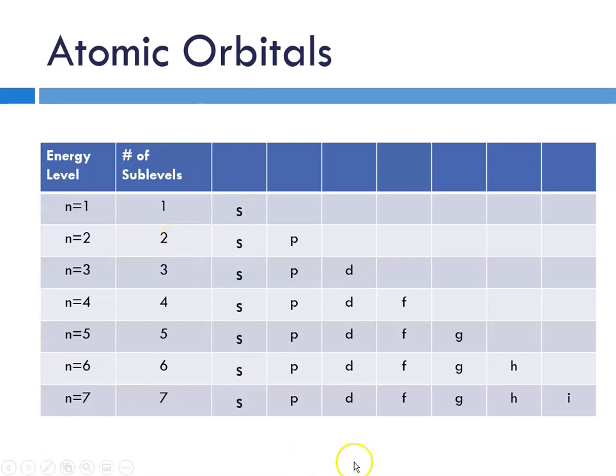The sublevels are named S, P, D, F, G, H, and I. And we looked at some visualizations that S always has a spherical shape, P is a dumbbell shape, and D is kind of cloverleaf. So we're going to take that a little bit farther today.